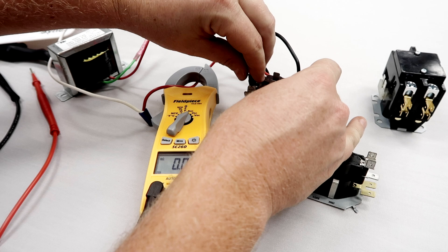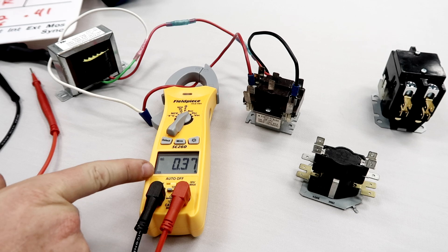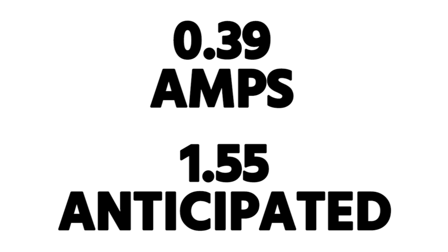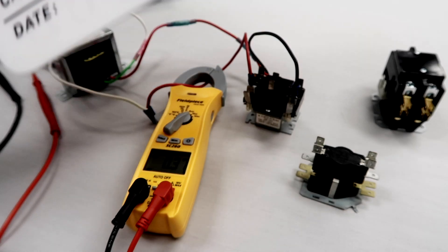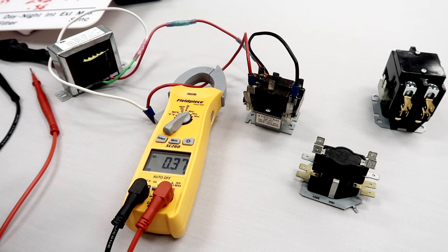Now let's try the relay. The relay is also an electromagnet, so inductive reactance comes into play. We now have 0.39 amps, when we anticipated we would have 1.55 based on just doing Ohm's Law math. Again, Ohm's Law is not broken — it's just that with an electromagnet, you can't measure that resistance beforehand and expect it to stay the same.